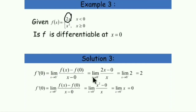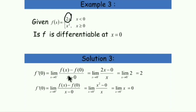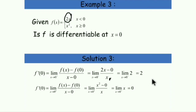So we compute: limit x approaching 0 from the left of [f(x) minus f(0)] over [x minus 0]. We substitute 2x for f(x), and f(0) equals 0, giving us 2x over x. Simplifying, we get the limit of 2 as x approaches 0 from the left, which equals 2.